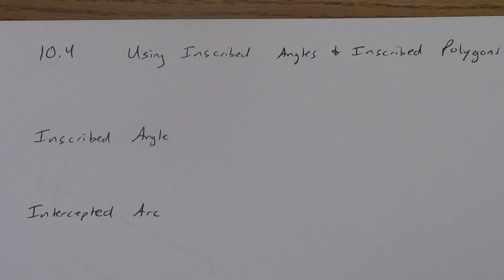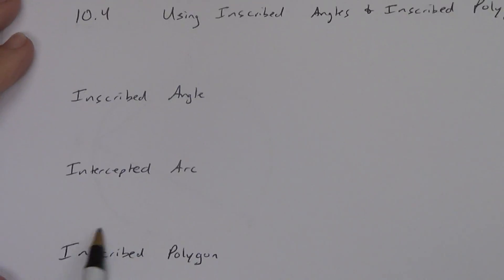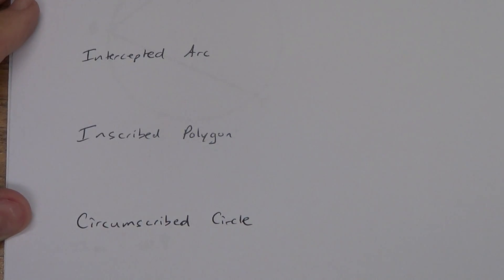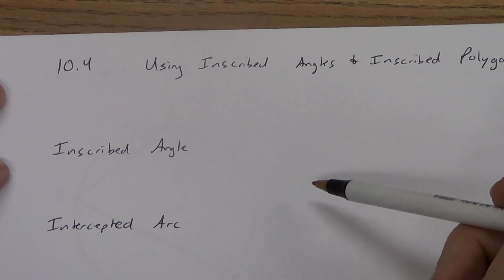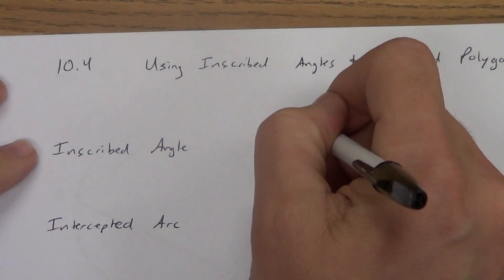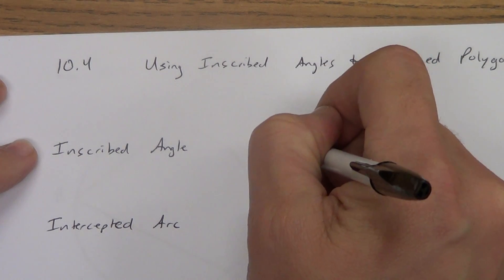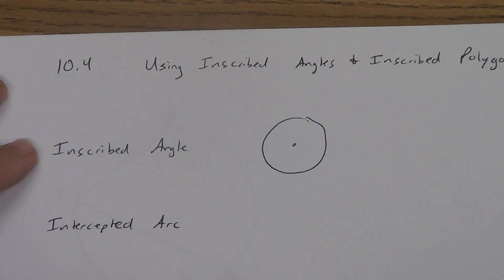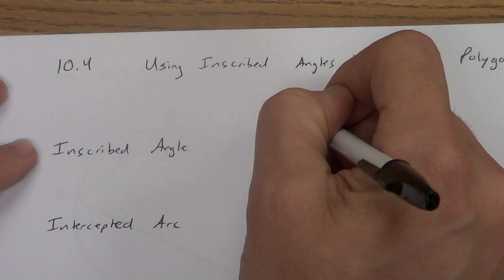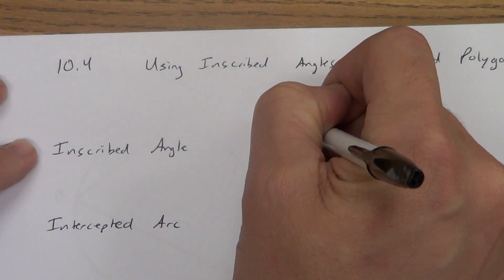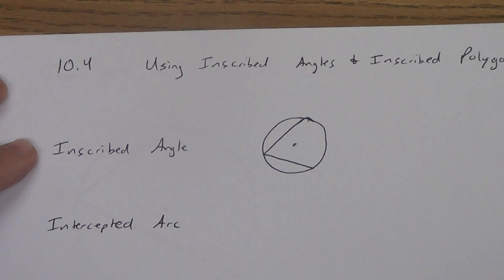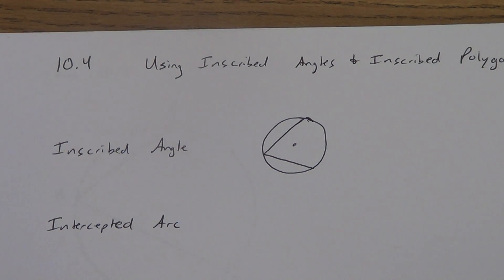We need to define inscribed angle. So what in the world is an inscribed angle? Let's start with inscribed angle — it's different than a central angle. Remember, a central angle was an angle whose vertex was right at the center of the circle. An inscribed angle is going to look different. We usually don't draw the rest of the angle with the rays; we kind of stop with segments.